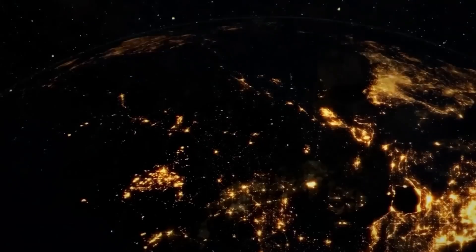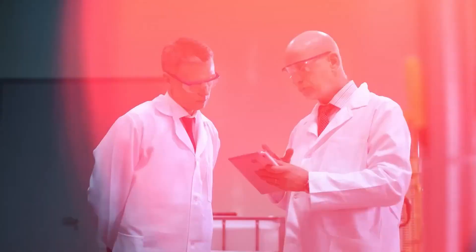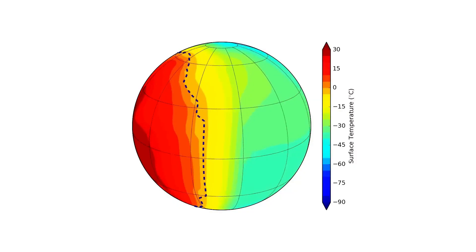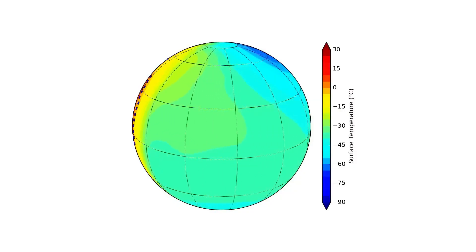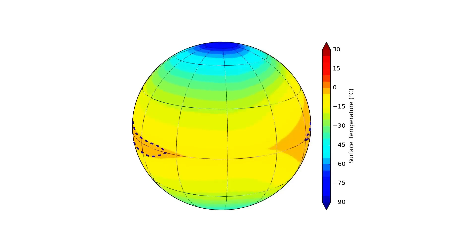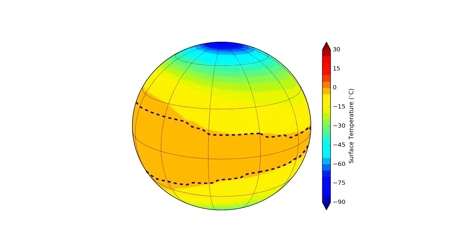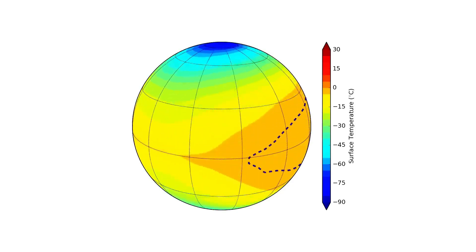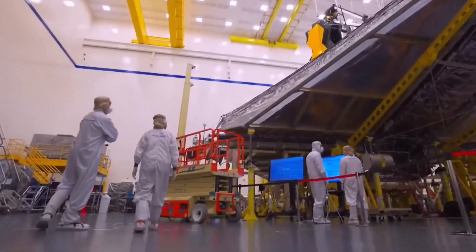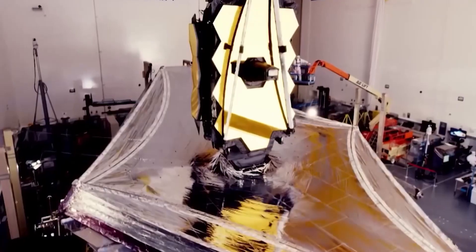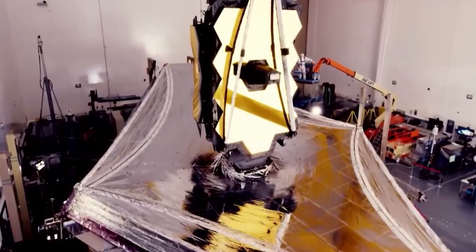The telescope is also equipped with a sunshield the size of a tennis court, made from a special material called Kapton. This shield protects the telescope from the heat of the sun, keeping it cool enough to observe faint infrared signals from distant objects. The sunshield is made up of five layers of Kapton, and each layer serves as a barrier to block out sunlight and prevent the telescope's instruments from overheating.